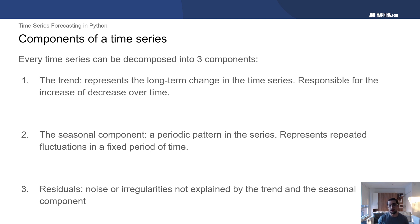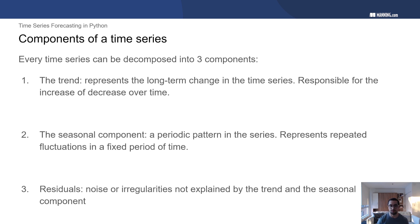Sometimes you can have no trend at all, so your time series is neither increasing nor decreasing. Then we have the seasonal component, which is when we see a periodic pattern in a time series — the repeated fluctuations that occur over a fixed period of time. Finally, we have the residuals, which is noise or irregularities not explained by the trend or the seasonal component.